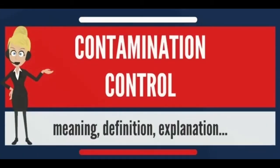Contamination control is the generic term for all activities aiming to control the existence, growth and proliferation of contamination in certain areas. Contamination control may refer to the atmosphere as well as to surfaces, to particulate matter as well as to microbes, and to contamination prevention as well as to decontamination. The aim of all contamination control activities is to permanently ensure a sufficient level of cleanliness in controlled environments.